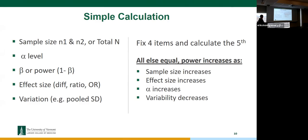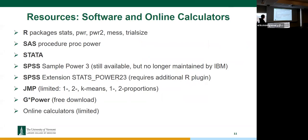If we hold those things equal and calculate power, it's clear: power goes up as your number of samples increases; power goes up as your effect size increases because you can detect a bigger effect more easily; power increases as alpha increases; and power increases as variability decreases in your data. That's how all these things hang together — it's a balancing act.